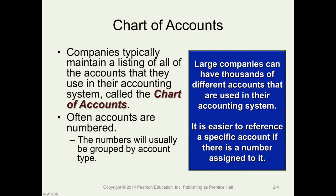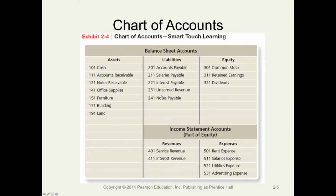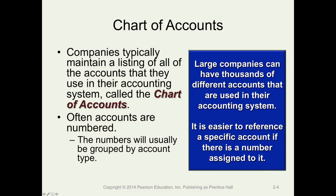Companies generally maintain a listing of their accounts known as the chart of accounts. The chart of accounts is ordered by number. Large companies have thousands of different accounts, and using numbers to refer to specific accounts is a lot easier than referring to the accounts by name.